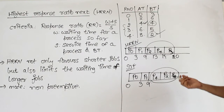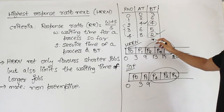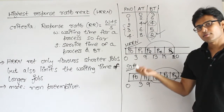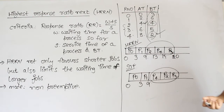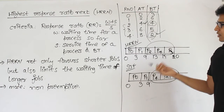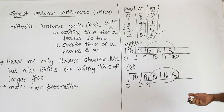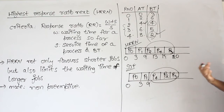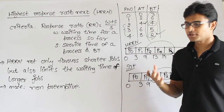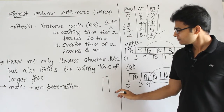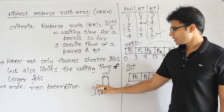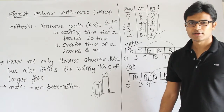The same disadvantage persists here: you cannot implement HRRN practically because burst time must be known in advance, which is not possible in real systems. Theoretically yes, and if you can estimate burst time using methods like process size, process type, or static/dynamic analysis, it could work. Most operating systems don't use this - round robin is more favorable. However, burst-time-based algorithms give the best possible performance and serve as a measuring scale against which other algorithms are evaluated.